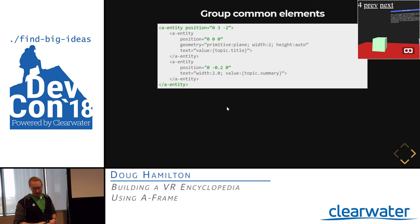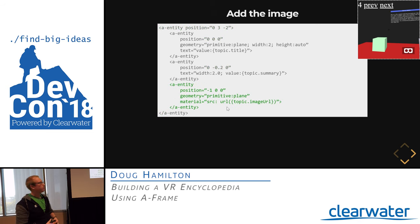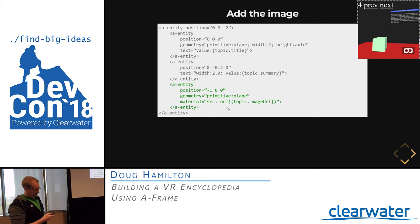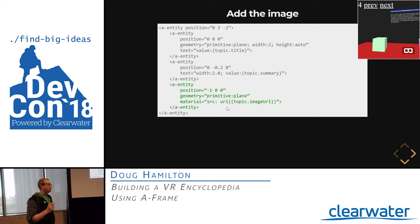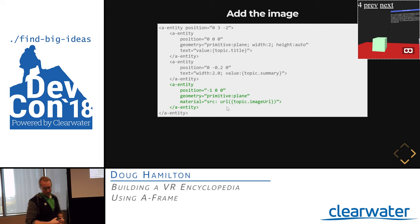Next we add the image. We add another entity positioned 1 unit to the left on the X-axis — one meter to the left of our title. To render an image in A-Frame, we add a geometry component set to the plane primitive and a material component with the source property set to the image URL from our topic. Behind the scenes, A-Frame and Three.js go and fetch the image from that URL, download it, convert it to a texture, and apply it to the geometry. Pretty concise in terms of lines of code.